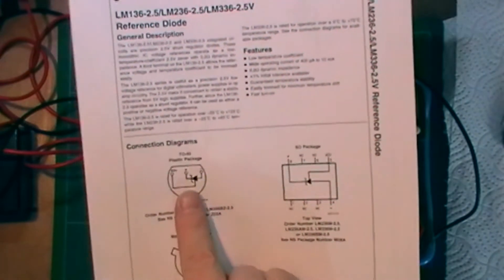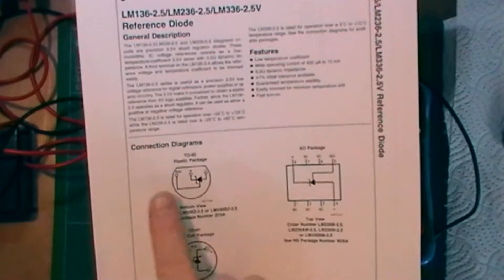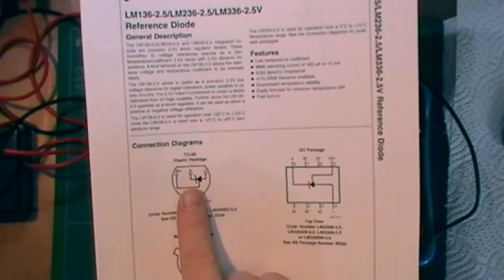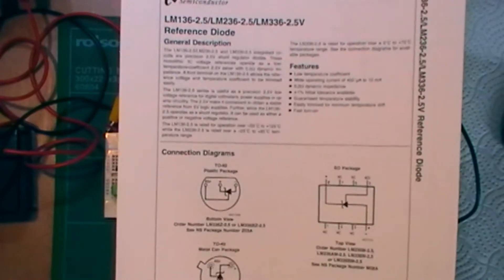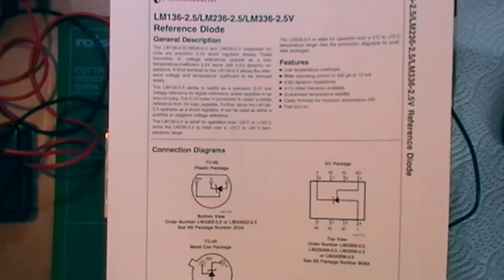This pin out shows that we've got the minus then the plus then the adjust. I think that's the wrong way around. I think what you've actually got is the adjust the plus and then the minus and I'll show you that when I put it in the circuit in a moment.